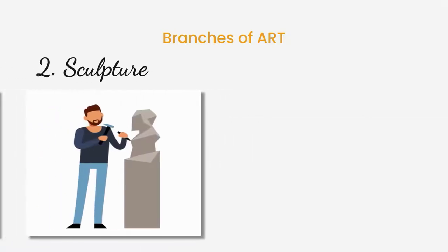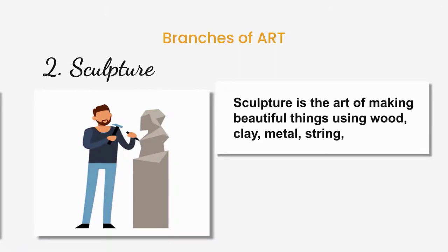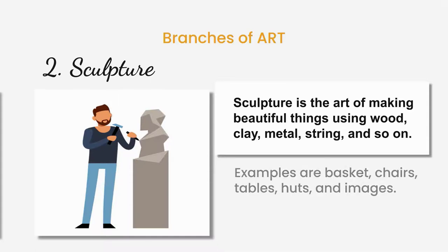Number 2: Sculpture. Sculpture is the art of making beautiful things using wood, clay, metal, stone and so on. Examples are baskets, chairs, tables, pots and images.